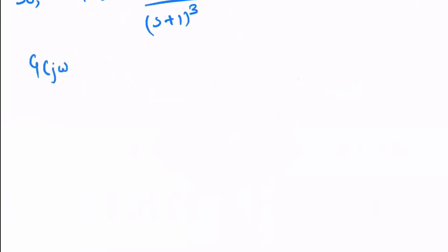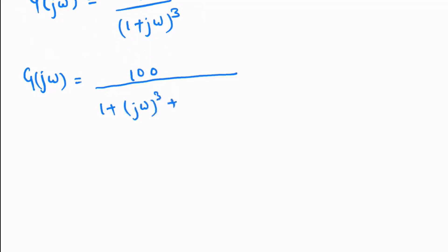So G(jω) = 100/(1+jω)³. Expanding the denominator: (1+jω)³ = 1 + 3jω + 3(jω)² + (jω)³.